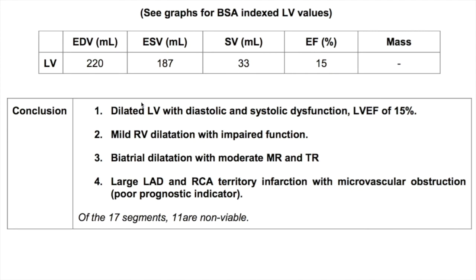The second part of the report contains left ventricular volumetry, with body-surface-area indexed volumes given on the second page. The conclusion describes dilated LV with systolic and diastolic dysfunction, LV ejection fraction of 15%. We address RV, atria, infarction, and any poor prognostic features. Finally we state that of the 17 segments, 11 are non-viable — this constitutes our standard viability report.